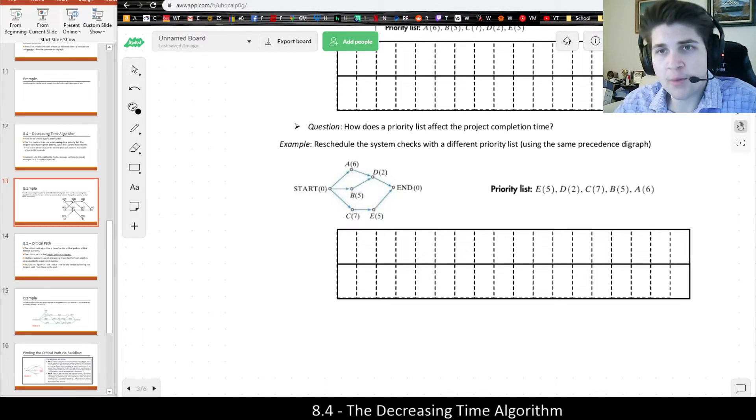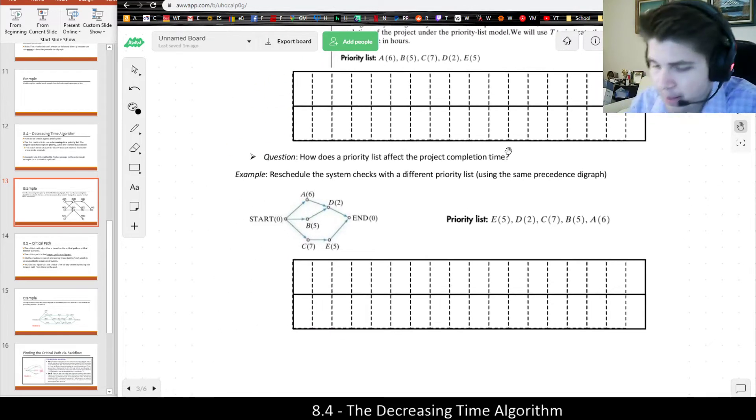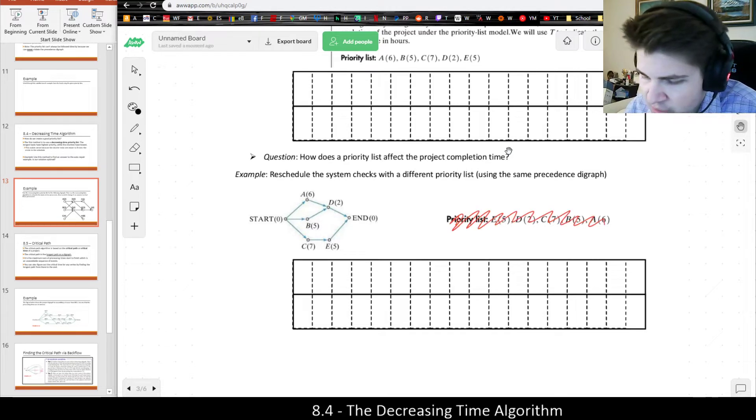So in this example, we did two random priority lists generated by alphabetical and reverse alphabetical. But let's see what happens if we do that. This is not on the packet, but as an extra example, if the previous one was a little bit confusing.